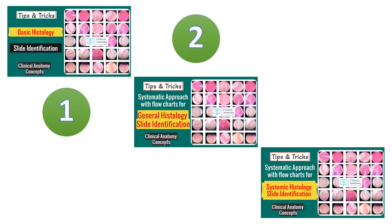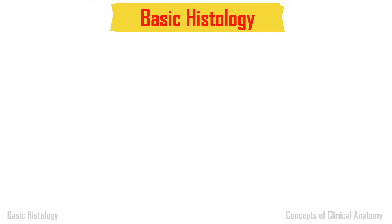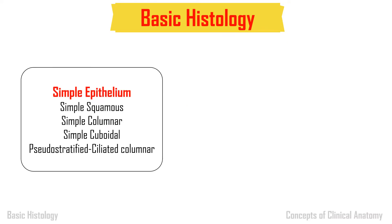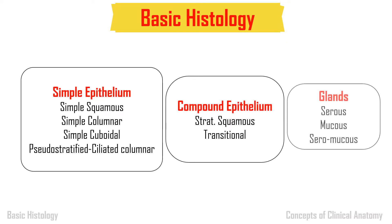In the next video, which is already uploaded, you can identify the general histology slide using a flow chart by the exclusion of slides one by one. Then in subsequent videos you will be able to identify the systemic slides in the same systematic flow chart approach. So we will be seeing mainly the simple epithelium, compound epithelium, and the glands.